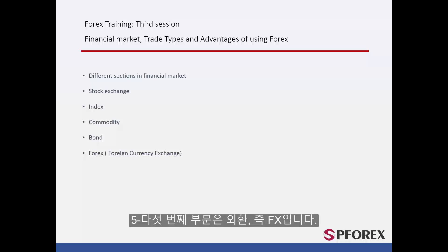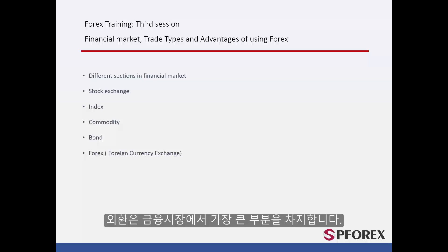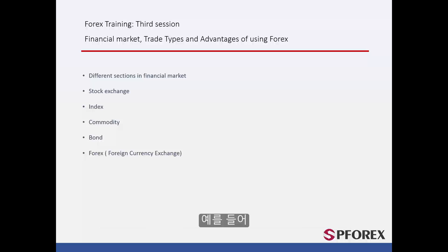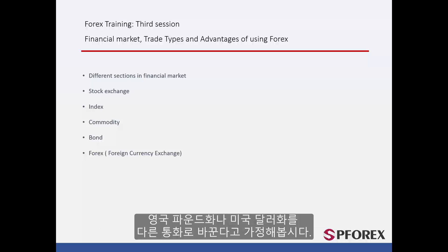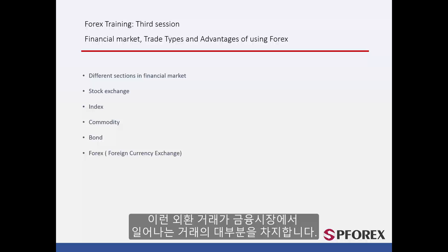The fifth section is related to the Foreign Currency Exchange and Forex. This is the largest part of the market. In this section, legal parties intend to buy and sell foreign currencies. For instance, when you take British Pounds or US Dollars to exchange for any other currency, you are selling and buying foreign currency. These kinds of transactions make up the majority of trades on all financial markets.